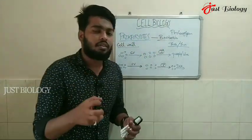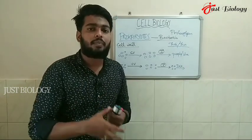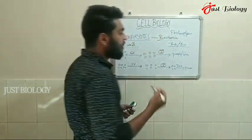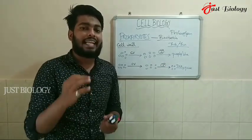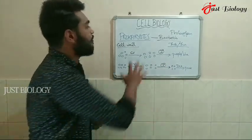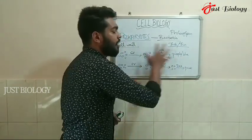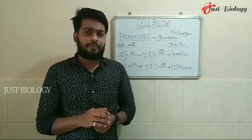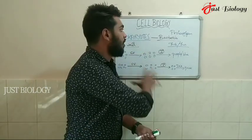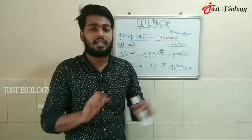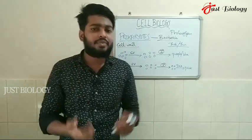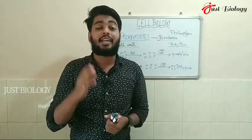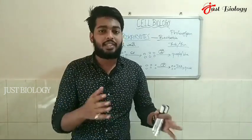After the decolorizing step, a counter stain called safranin is added. Safranin strongly binds to the Gram-negative cells, causing them to appear pink in color. This pink color represents Gram-negative cells. This is the basic technique for classifying bacteria according to their cell wall composition. If you like the video, please hit the like button, subscribe to the channel, and click the bell icon for the latest updates.